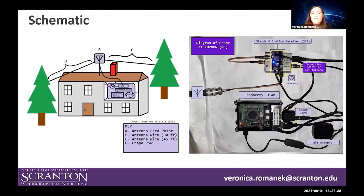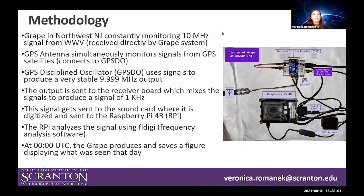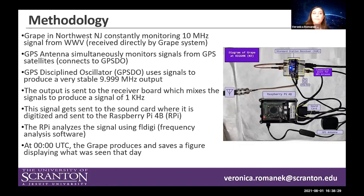This schematic on the left-hand side shows the setup at my house. On the roof at point A is the antenna feed point, and B and C are the wires connected to trees near my house. A coaxial cable runs from point A through my wall and connects to the GRAPE in my room. The GRAPE also has a GPS antenna monitoring signals from GPS satellites. Both connect to the GPS DO, a gray box that produces a very stable 9.99 MHz output.